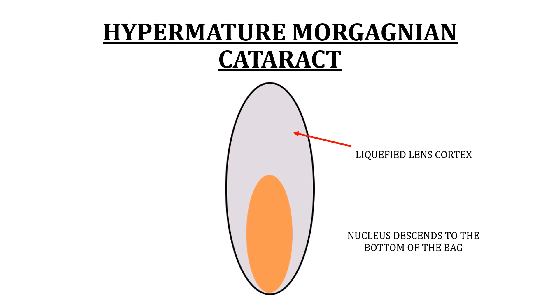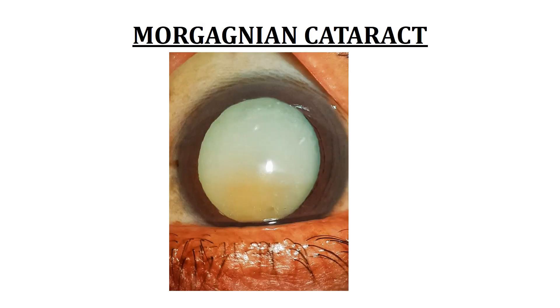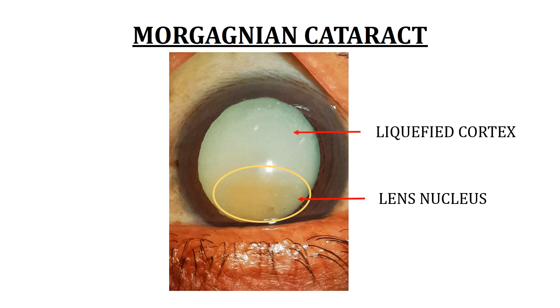This is what a Morgagnian cataract looks like on slit lamp. The yellowish-brownish shadow visible in the lower part of the image is the lens nucleus that has sunk to the bottom of the capsular bag, and the rest of it is liquefied cortex.